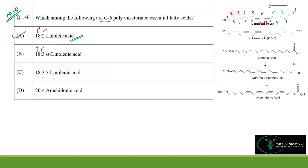Alpha-linolenic acid (18:3) has three double bonds. Numbering from the methyl end, the first double bond occurs at position 3, making it an omega-3 fatty acid. Therefore option B (alpha-linolenic acid) is incorrect for omega-6.